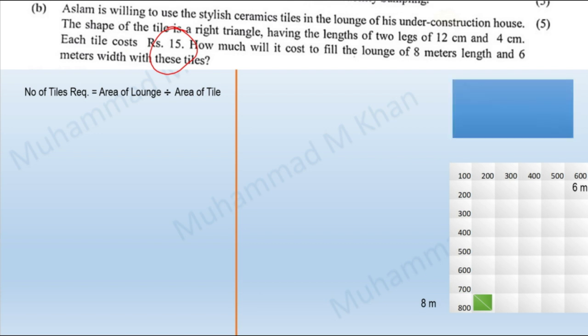We know that the area of a rectangle is the product of length and width. The area of a triangle is half the area of a rectangle. If we have a rectangle of sides 4 and 12 centimeters, the area of the rectangle would be 48 centimeters square. A right angle triangle is basically a rectangle cut in half — this is the logic behind the formula to calculate the area of a triangle.